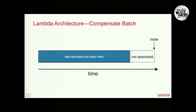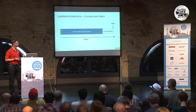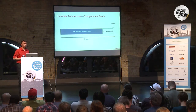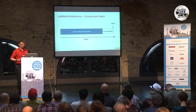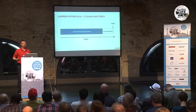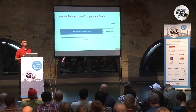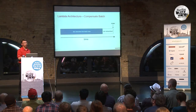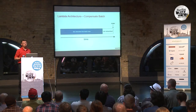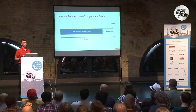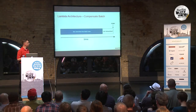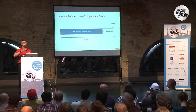If you think about that: if you're a developer and you have a bug in there, even if that bug shows, it only shows for that time window. The next time the batch run goes over that data, your maybe inconsistent data goes away. The batch layer essentially always takes the entire master dataset into account.